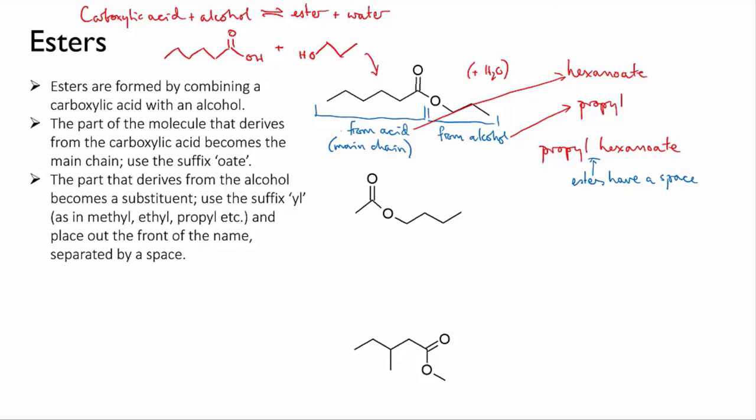Okay, how about this second one? First, identify the main chain. That's the bit on the carbonyl side here. And it has two carbons. Don't forget the carbon that's part of the carbonyl. So we'll call that part ethanoate.